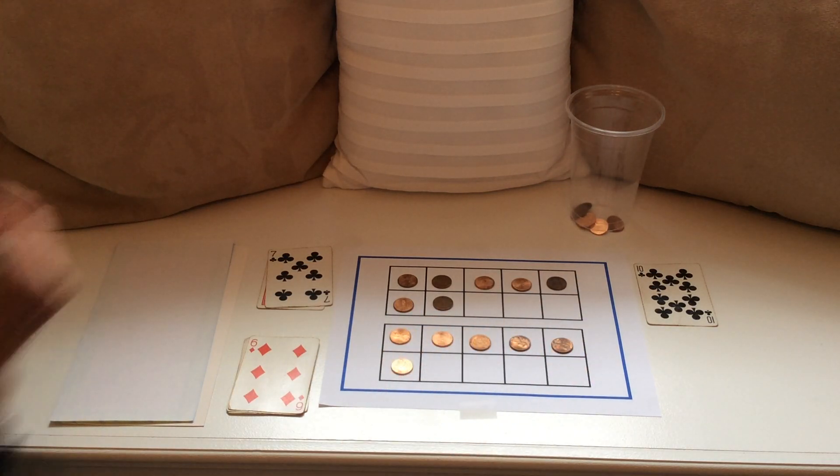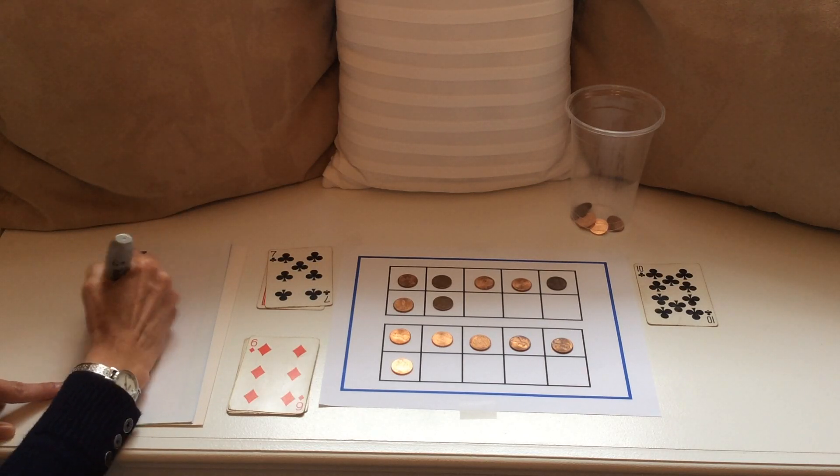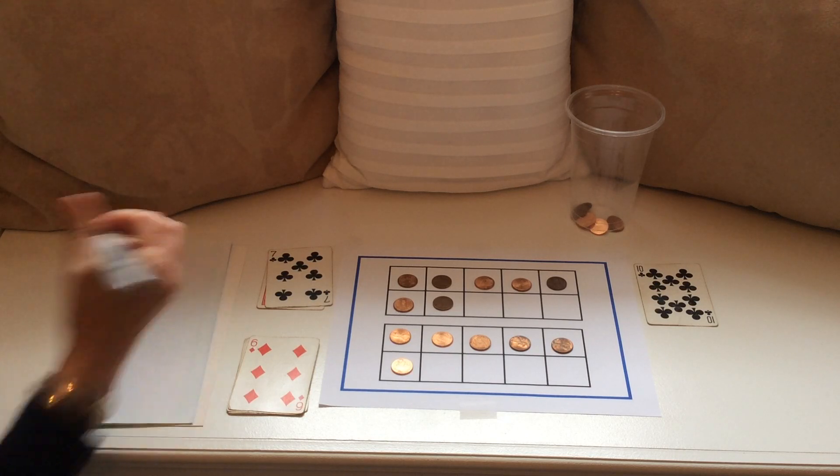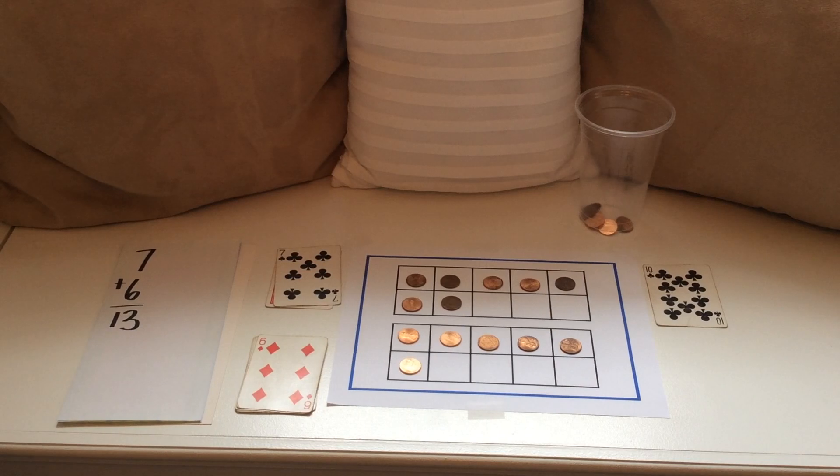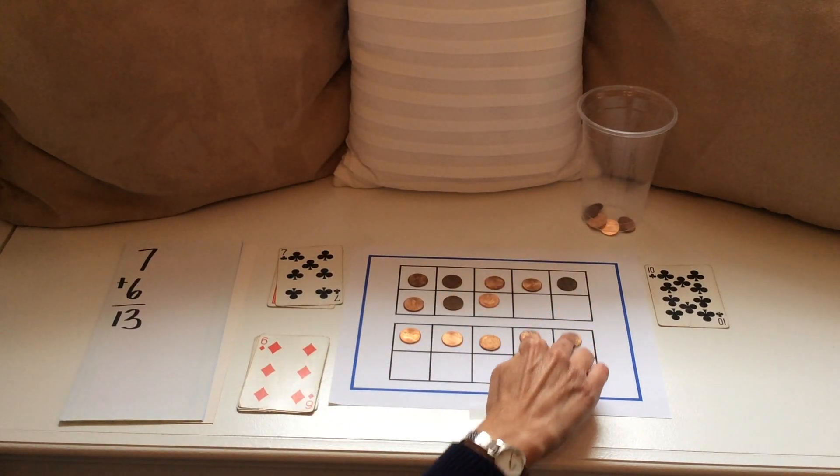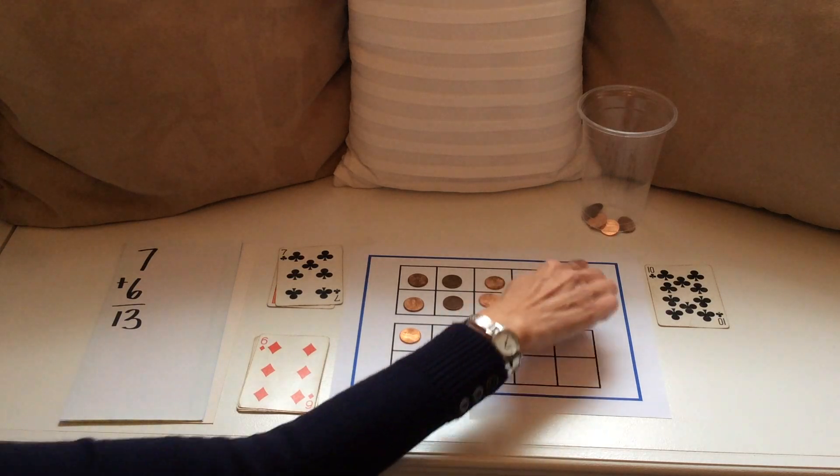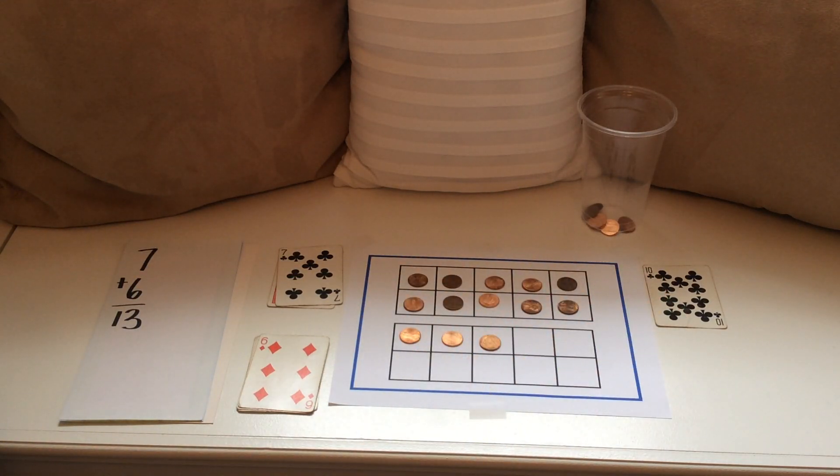I can show this as a vertical addition sentence 7 plus 6 equals 13. Now let's try it as the friendly 10 strategy. I'm going to slide or fill up our first 10 frame. Now I have friendly 10 and 3 more.